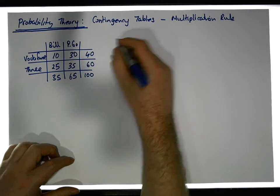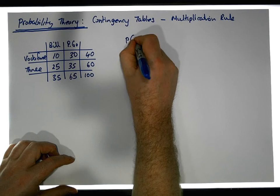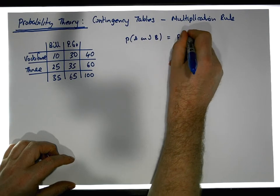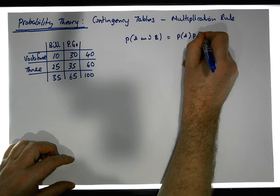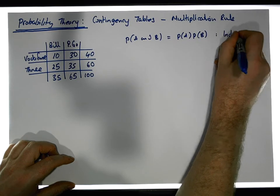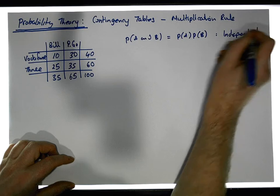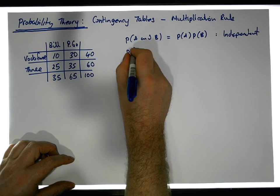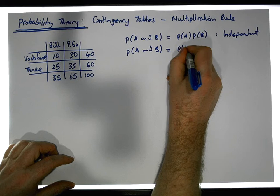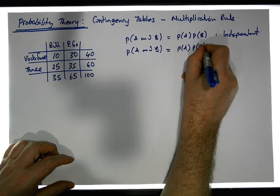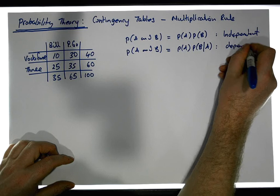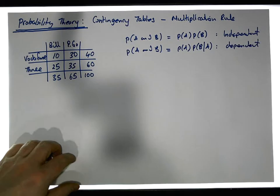Now let's look at the multiplication rule. The multiplication rule states that the probability of A and B is the product of the individual probabilities — probability of A times probability of B — when the two events are independent of each other. The other possibility is that the probability of A and B equals the probability of A times the probability of B given that A has happened, when they are dependent on each other.